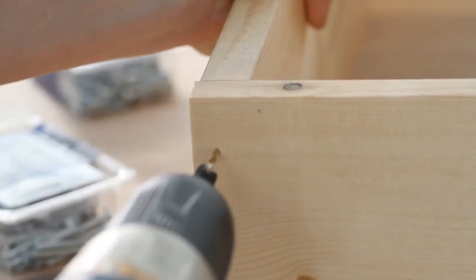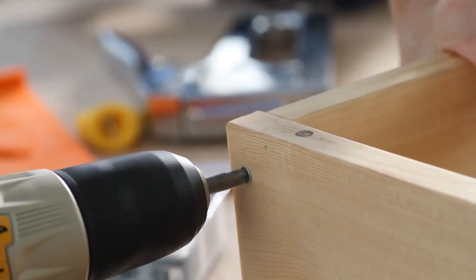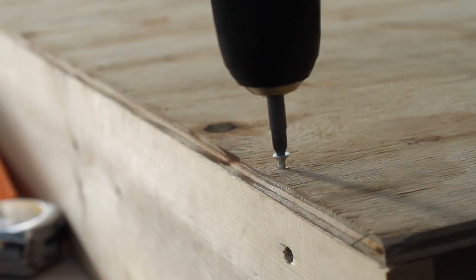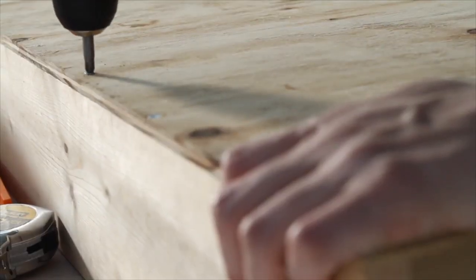Use a drill and 1 and a half inch exterior wood screws to join the top and bottom boards together, but hold off on the middle board for now. Then, take the piece of plywood and secure it to the back of the bed.